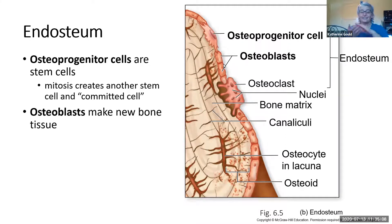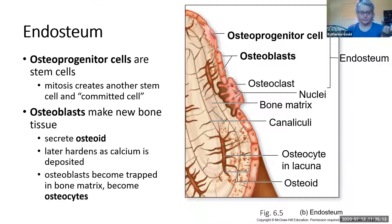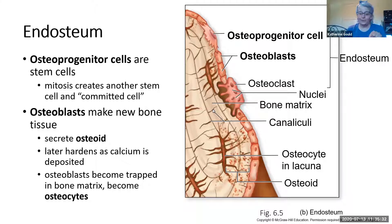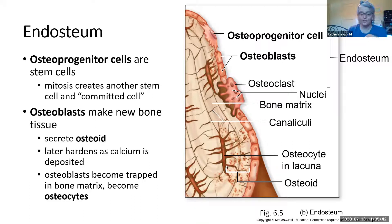The osteoblast is going to lay down new bone tissue, putting down a tissue called osteoid, which is primarily collagen. Then that's going to be replaced by calcium — calcium diffuses out of the bloodstream into these tissues and hardens the osteoid into bone. As that happens, some of the osteoblasts get trapped and become osteocytes.